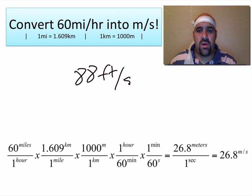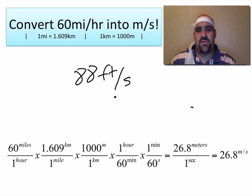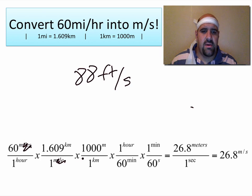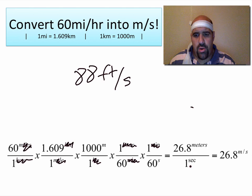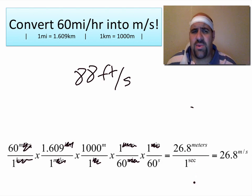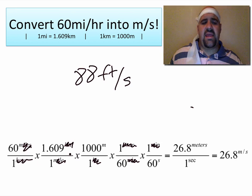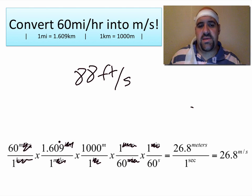That gives you your final answer. If you're traveling 60 miles per hour, not only is that 88 feet per second as we just saw, you would also be traveling 26.8 meters per second. Miles cancels with miles, kilometers cancels with kilometers, hours cancel, minutes cancel — top and bottom — and we are left with meters per second: 26.8 meters per second. That's how we do advanced unit conversions. I told you earlier to get used to setting up a blank fraction conversion factor, because the problems only get more challenging in chemistry and physics. Hopefully that helps!